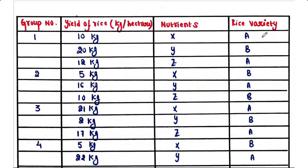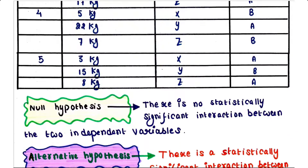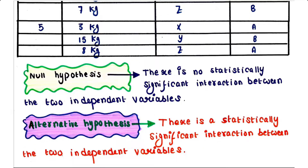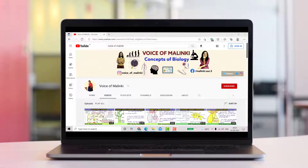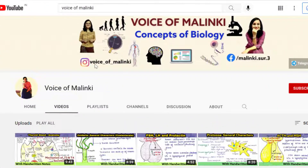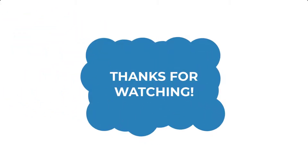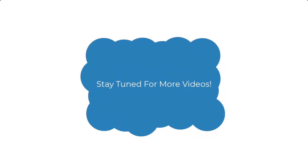Here we have a table showing two types of rice variety as the extra factor in two-way ANOVA. The null hypothesis is: there is no statistically significant interaction between the two independent variables. The alternative hypothesis is: there is a statistically significant interaction between the two independent variables.